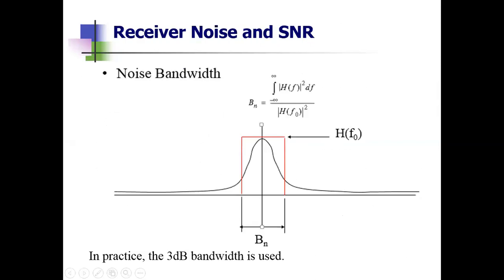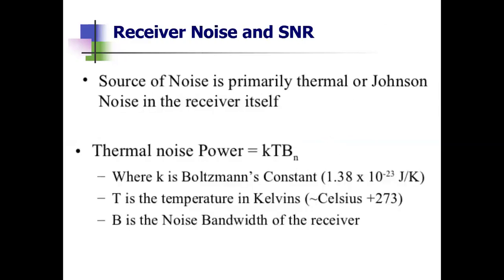Moving forward to receiver noise and SNR: as noted in the previous video, we were ignoring the receiver noise present in the radar block diagram. However, due to receiver noise there are many issues. At microwave frequencies, the noise with which the target echo signal competes is usually generated within the receiver itself — so the main problem is receiver noise.